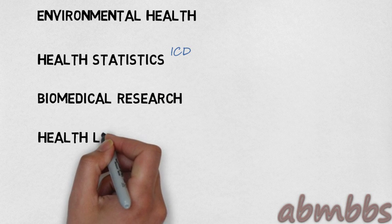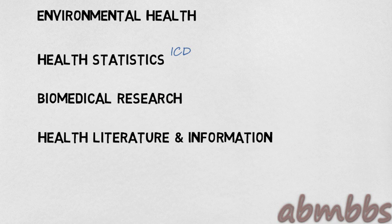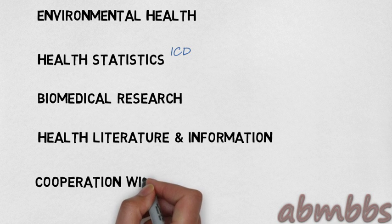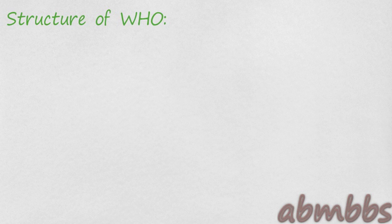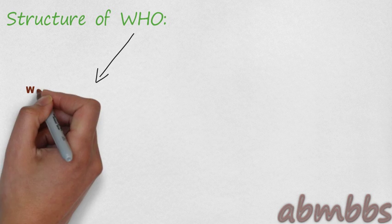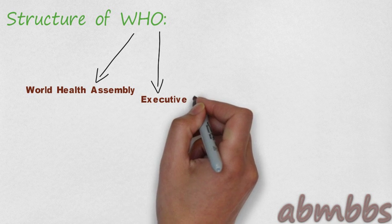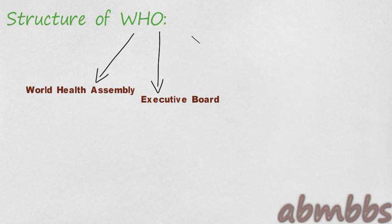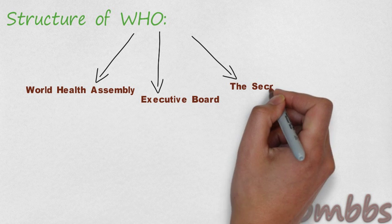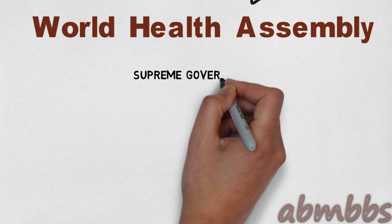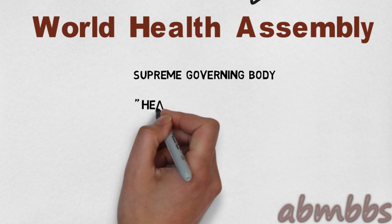The works of WHO also include research, maintenance of health literature, and cooperation with other global organizations. The WHO has mainly three organs: the World Health Assembly, the Executive Board, and the Secretariat. The World Health Assembly is the supreme governing body.